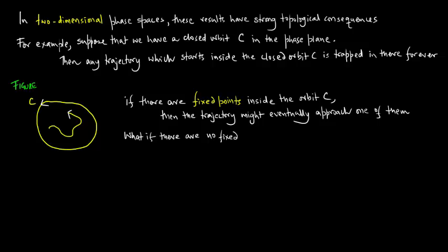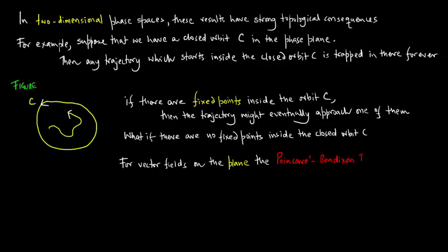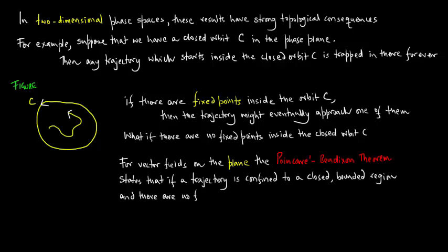What happens if there are no fixed points inside the closed orbit C? For vector fields on the plane, the Poincaré-Bendixson theorem states that if a trajectory is confined to a closed bounded region and there are no fixed points in the region, then the trajectory must eventually approach a closed orbit.